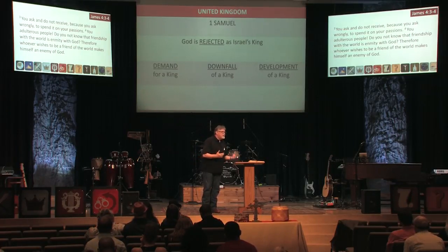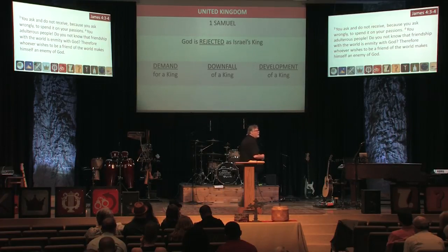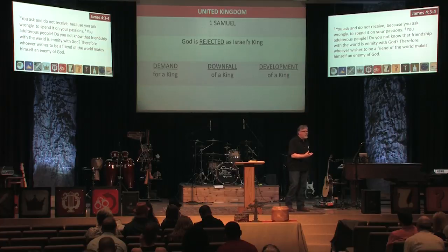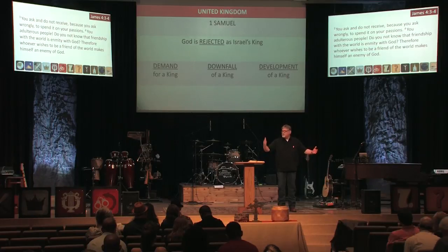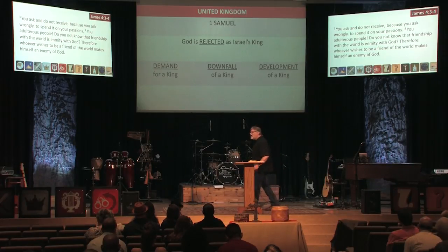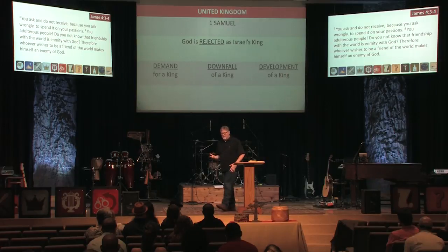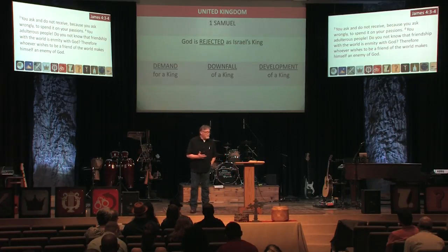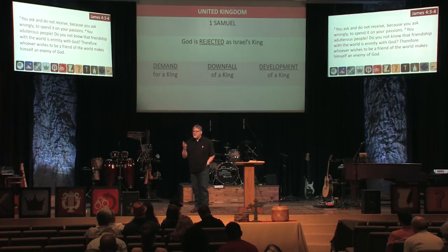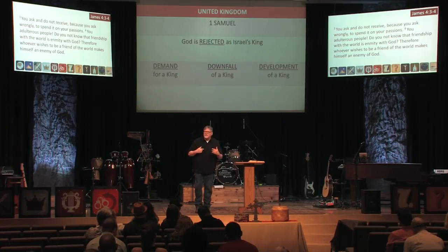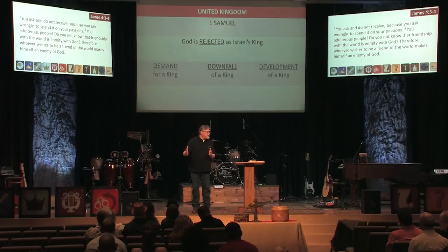David is going to receive the kingdom and is anointed with oil by Samuel. He's told he's going to be the king, but there is a delay before the kingdom passes from Saul to David. During that time, Saul is very threatened by David and tries to kill him several times. David's faith is developed in a huge way while he's basically a fugitive, while Saul the king is trying to take him out.